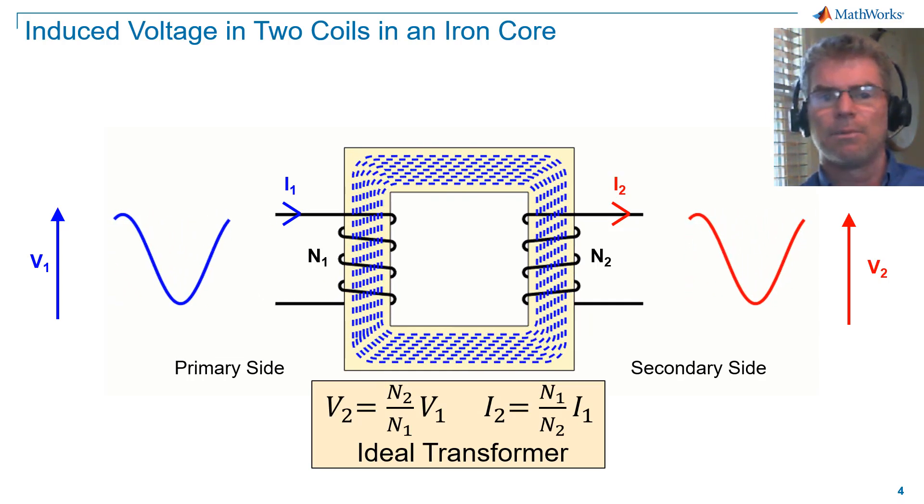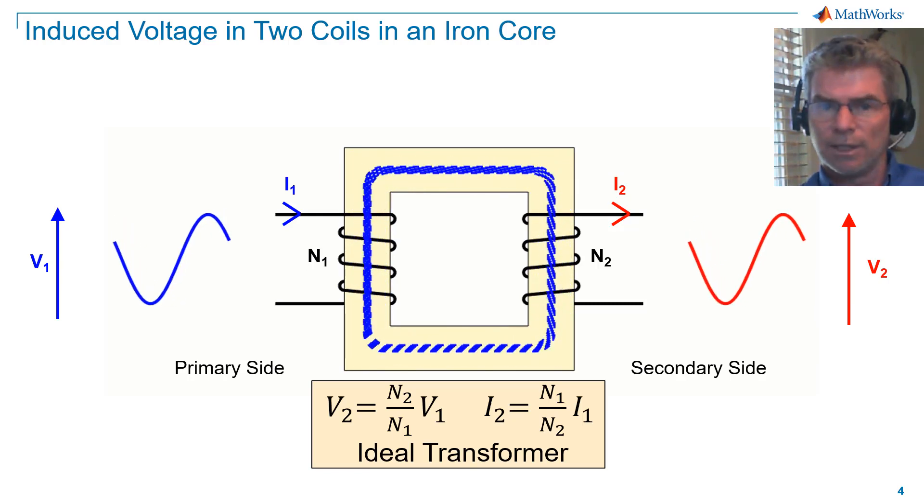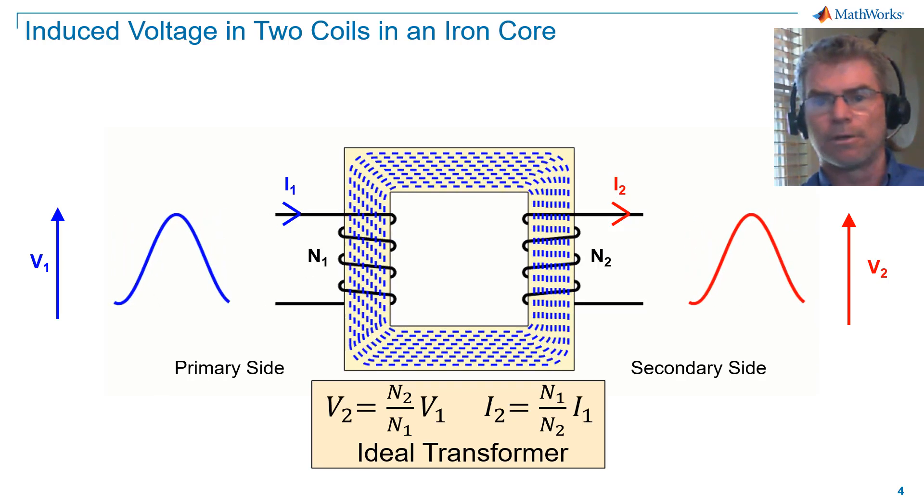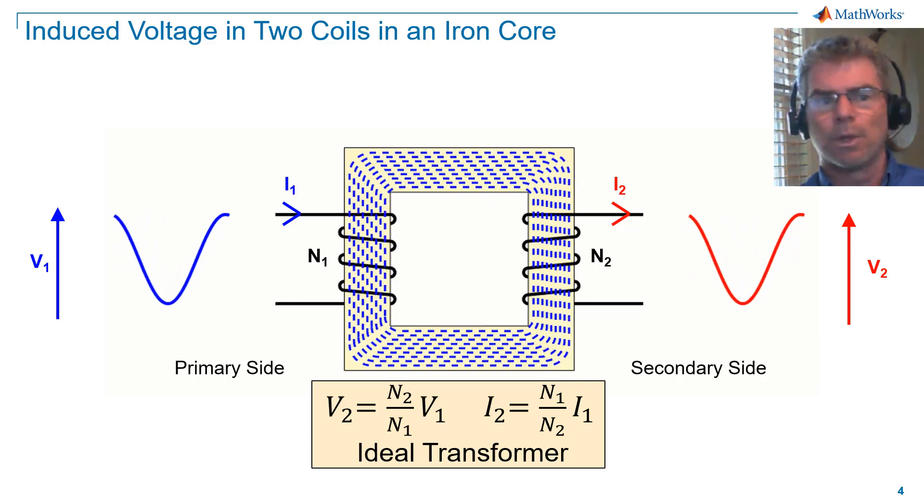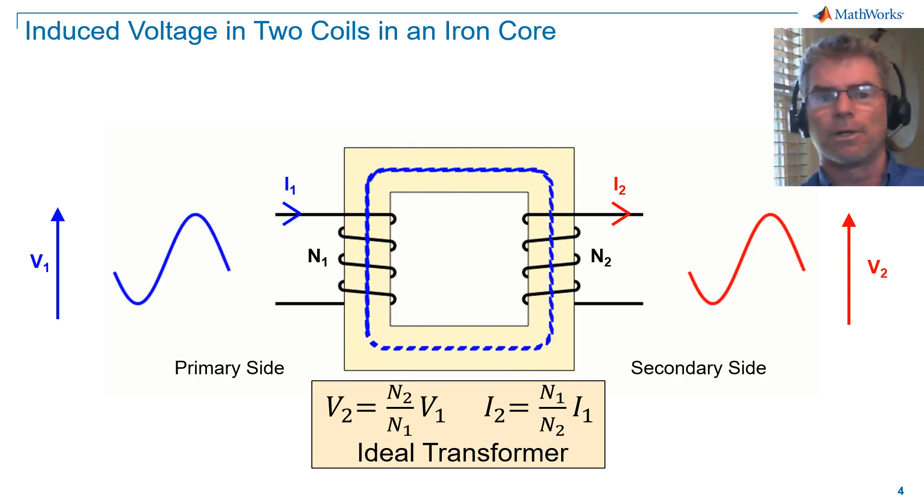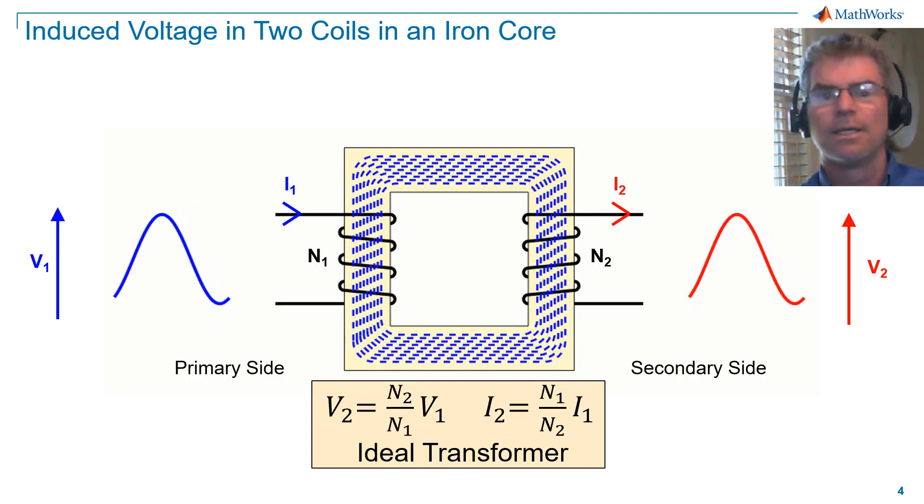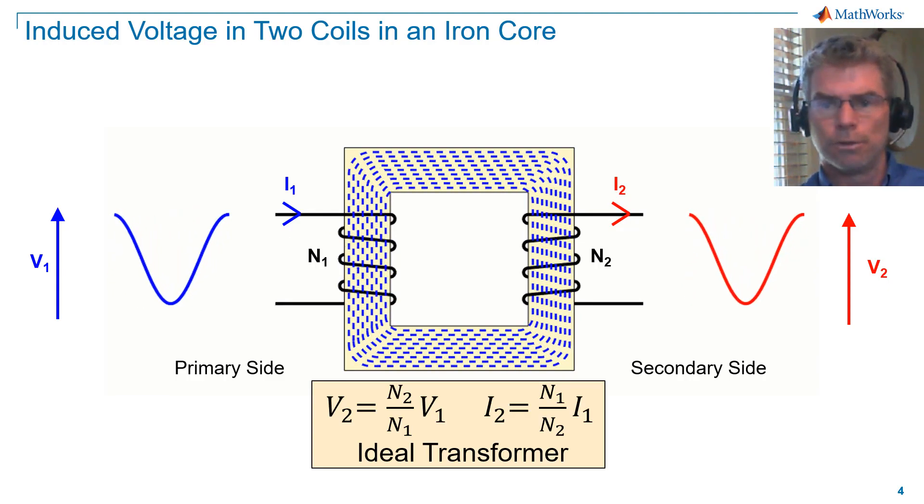V2 is equal to V1 times the number of coils in the secondary, N2, divided by the number of coils in the primary, N1. I2 is equal to I1 times the ratio of the number of coils in the primary, N1, divided by the number of coils in the secondary, N2.